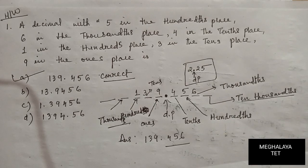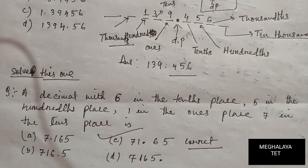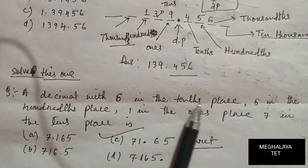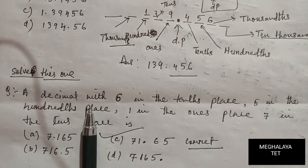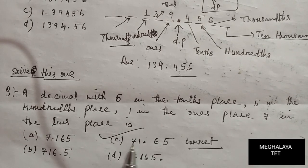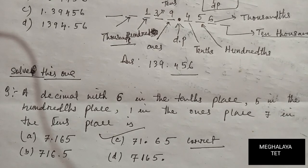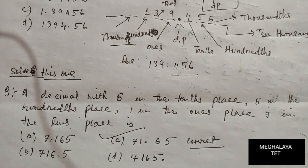I'll give you one practice problem to try: a decimal with 6 in the tenth place, 5 in the hundred place, 1 in the ones place, and 7 in the tenth place. There are four options and the correct answer is option C. You can try this one, and if you can't solve it, inform me. In the next video I'll bring one more concept important for your exam. I'm trying to cover at least 60 to 70 concepts so you get all the questions in your exam. Thanks for watching, bye.